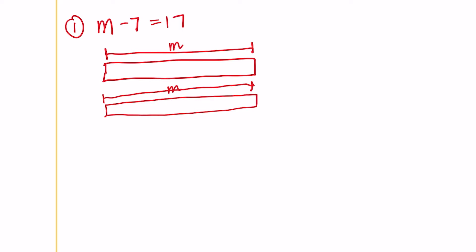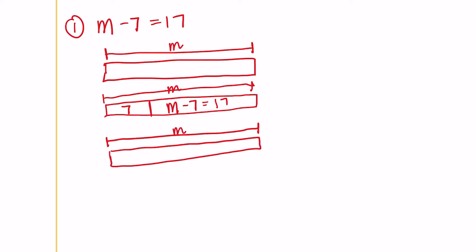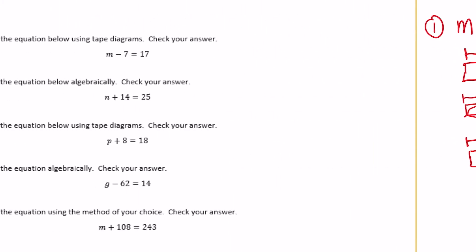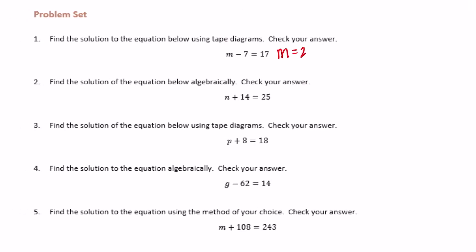This time I'm going to use my two numbers. So we have 7, so that piece is 7, and we have M minus 7 is equal to 17, and the whole thing is M. So our last tape diagram, we still have M, and we know that this piece is 7 right here, and M minus 7 is equal to 17. So what we could do is add the 17 and 7 to get M. So 7 plus 17 would be equal to 24. So M is equal to 24.